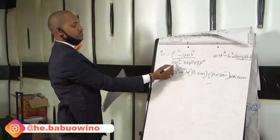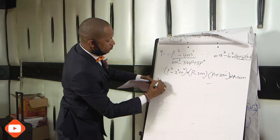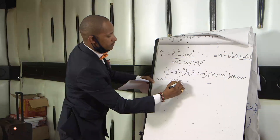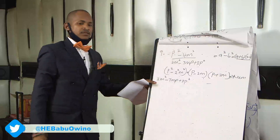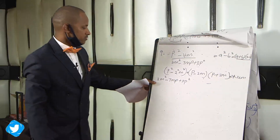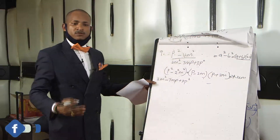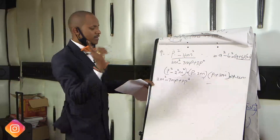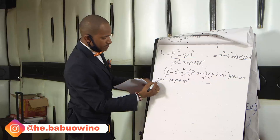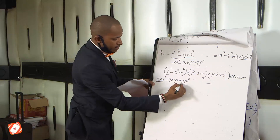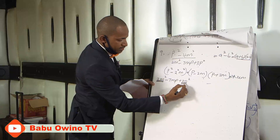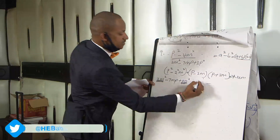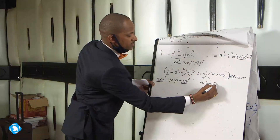Then we go to the denominator. At the denominator, we have 2m squared minus 7mp plus 3p squared. This is a quadratic expression, and we solve it by factorizing. Look for two numbers that when you multiply, give you 2m squared times 3p squared, which is 6m squared p squared — so effectively a coefficient product of 6.